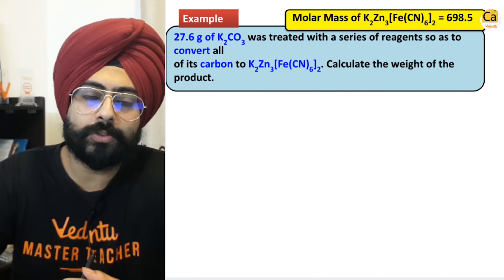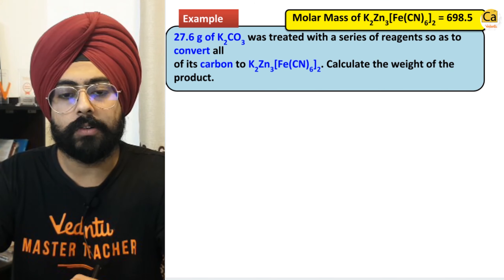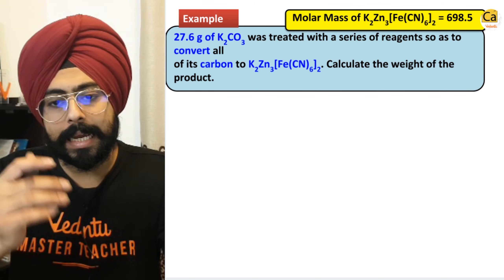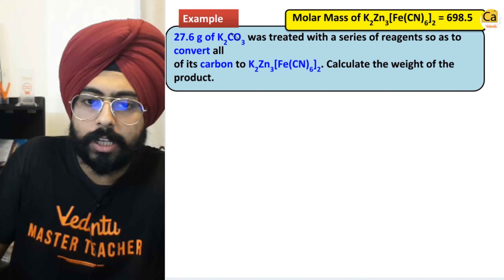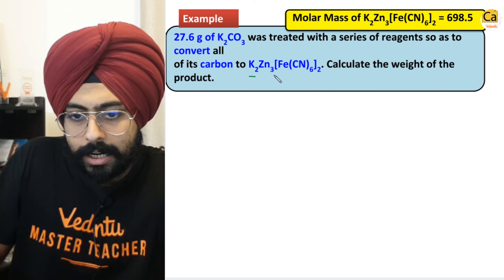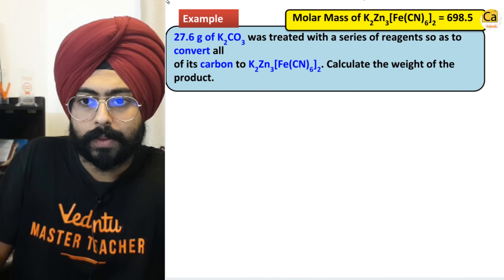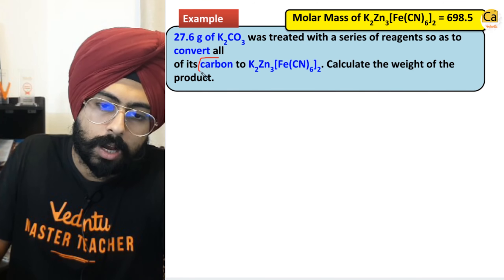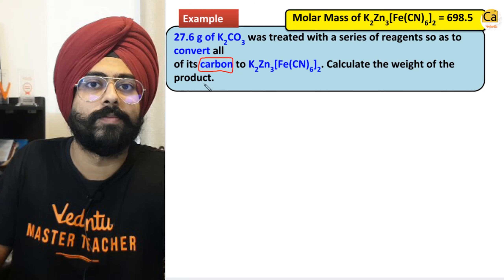27.6 grams of K2CO3 was treated with a series of reagents so as to convert all of it into K2Zn3[Fe(CN)6]2. We are converting all the carbon from K2CO3 into K2Zn3[Fe(CN)6]2. This is the carbon over here, and in the question it is given to us that we need to conserve carbon.